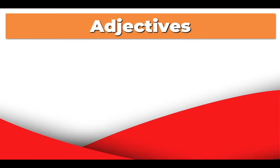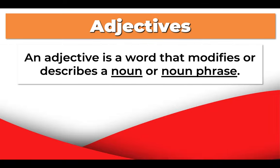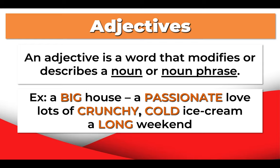Okay, what are adjectives? An adjective is a word that modifies or describes a noun or a noun phrase. Don't forget that adjectives don't have plurals and don't have masculine or feminine. They stay the same. Let's look at some examples.